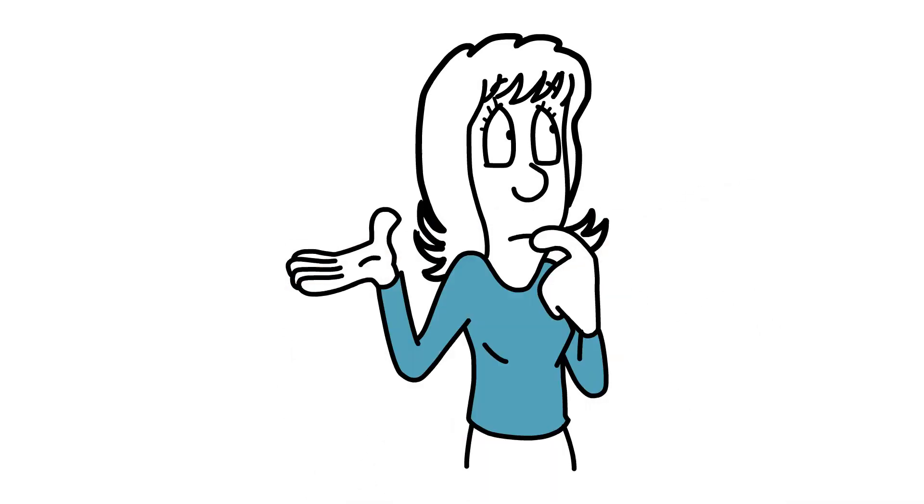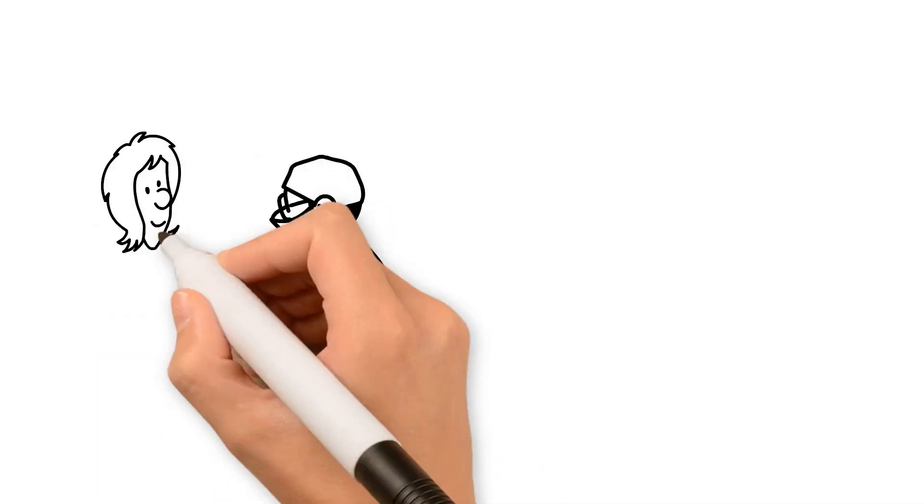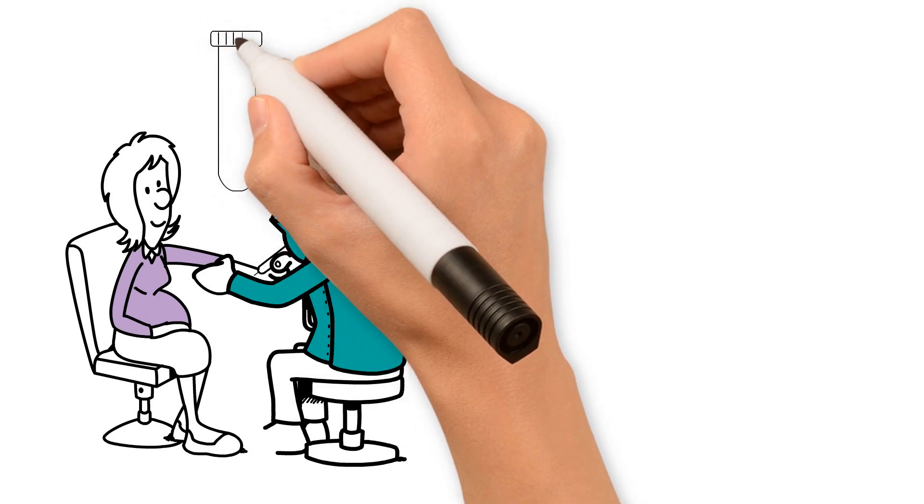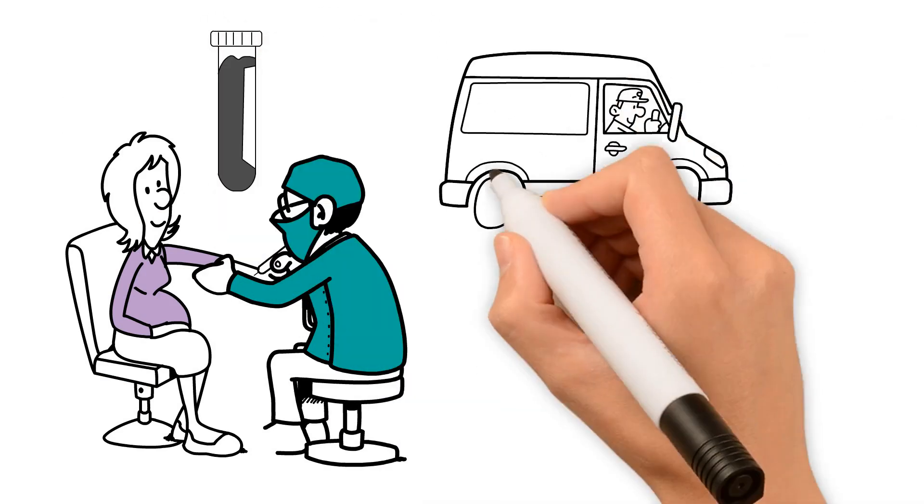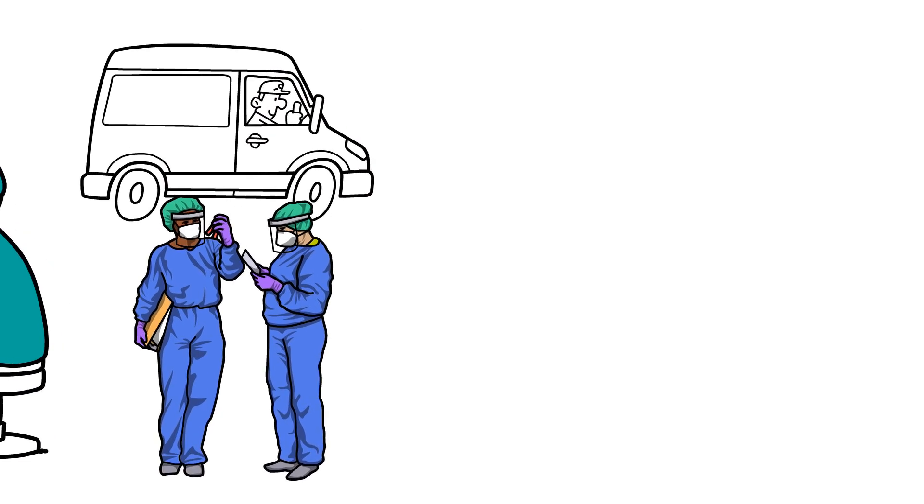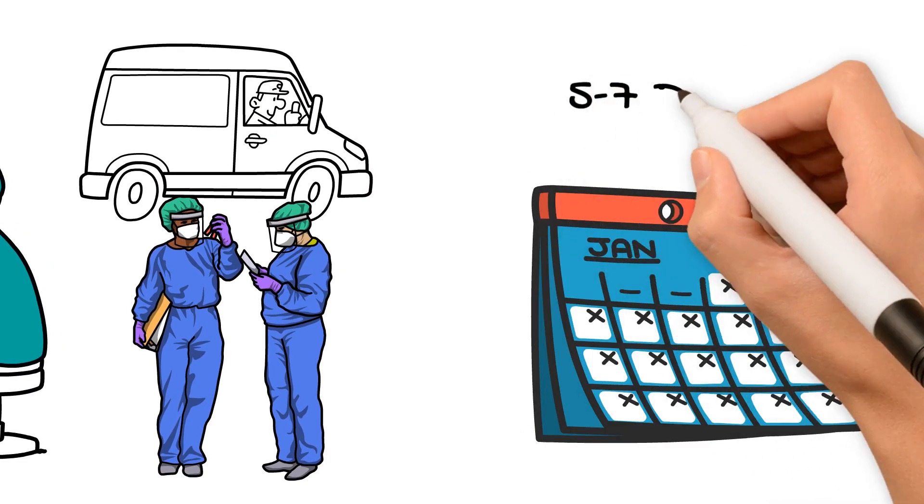How does the test work? Simple. Our clinician will take two blood samples from you, which will then be sent to a third-party laboratory. Results usually come back within five to seven working days.